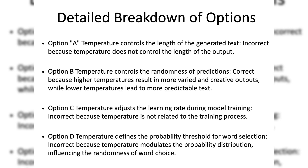Conversely, a lower temperature sharpens the probability distribution, making the model more likely to choose high-probability words, resulting in more predictable and focused text. Option C: temperature adjusts the learning rate during model training. This is incorrect because temperature is not related to the training process or the learning rate — temperature affects the model's output during text generation, not during training.